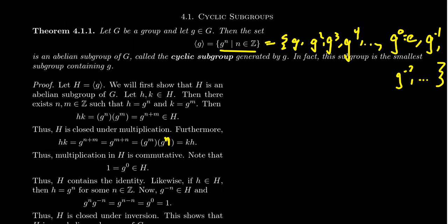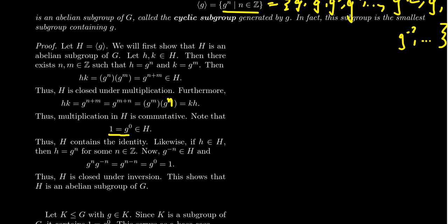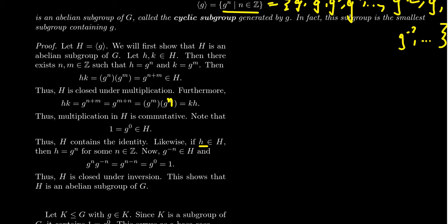To finish showing H is a subgroup, we need it to contain the identity and inverses. The identity is clear: by definition, g to the zero equals e, the identity of the group, so H contains the identity. For inverses: if you take any element h inside H, it can be written as g^n. Since we take all integer powers of g, H also contains g^(−n). By exponent rules, g^n times g^(−n) gives the identity, so g^(−n) is the inverse of h. This shows H is closed under the inverse operation, and therefore H is an abelian subgroup of G.